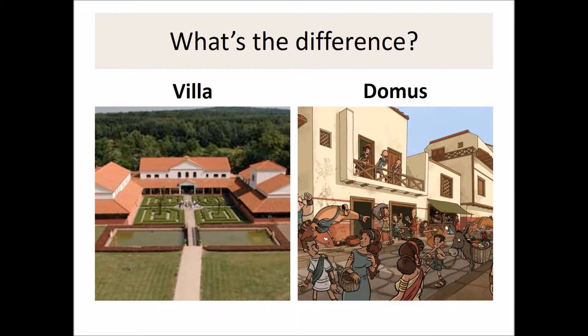Previously in Latin 1, we talked about various types of housing in ancient Roman society, and one of the things that we talked about was the difference between the villa and the Domus. Go ahead and pause the video while you come up with your shortlist. What do you remember from Latin 1? What is the difference between a villa and a Domus?